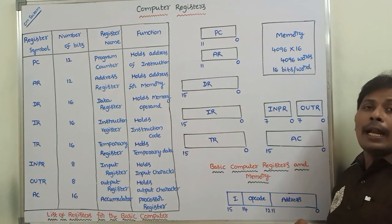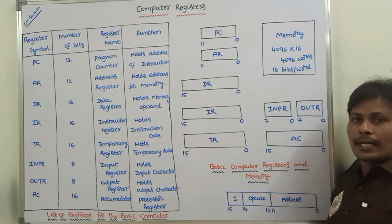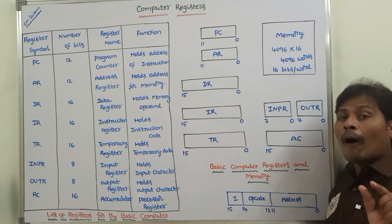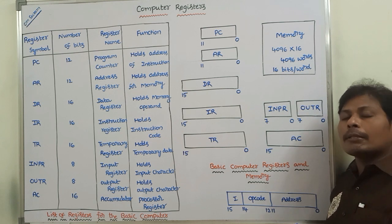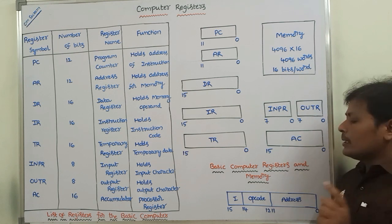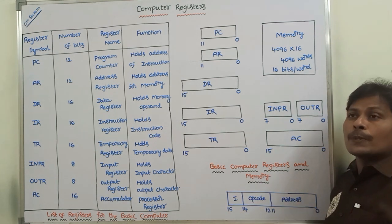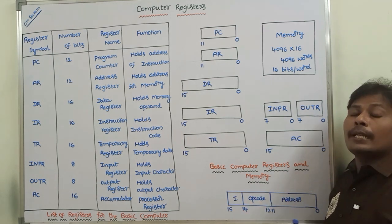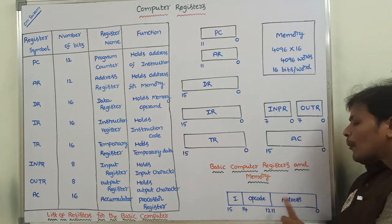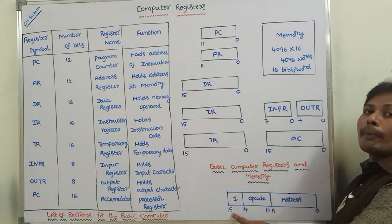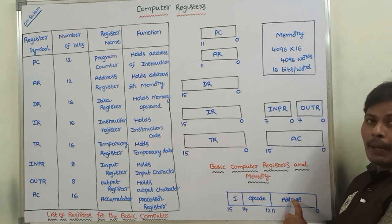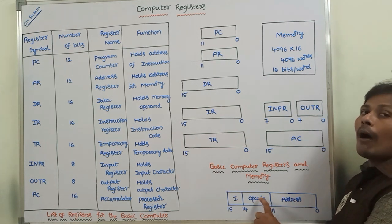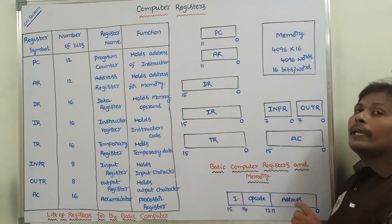In general, a program is a set of instructions. These instructions are stored in the memory at a particular address by using a format called instruction format. This is a 16-bit instruction format, from bit 0 to 15. This instruction format can be divided into three parts. The first part is called the address part, the second part is called the opcode part, and the third part is called the mode part.